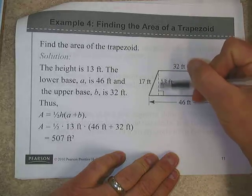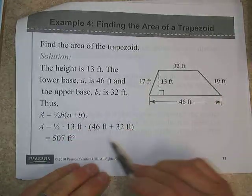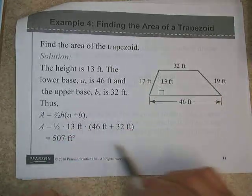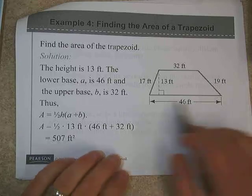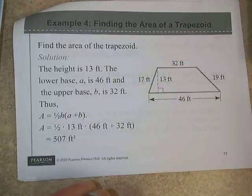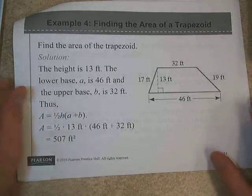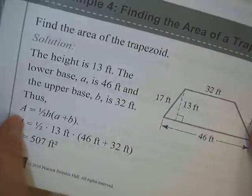And we have the parallel side, 32, parallel side, 46. And we have the distance between them, 13. Do not need the 17 or the 19 in this case. And we just need the three, as I mentioned, 13, 46, and 32. The two parallel sides are the two bases. The distance between them is the height. And if we plug it in and do the math properly, we get 507 feet squared.